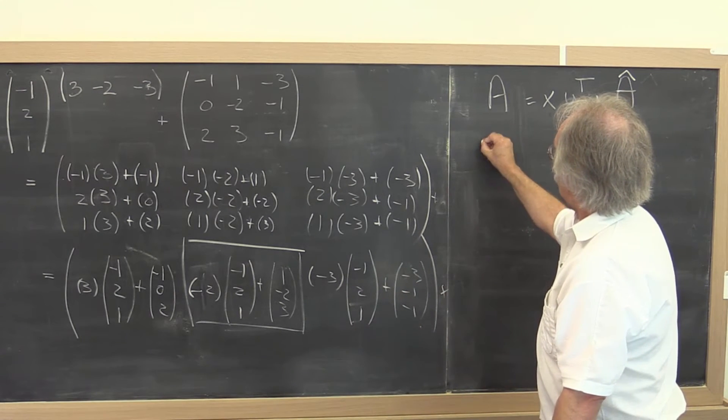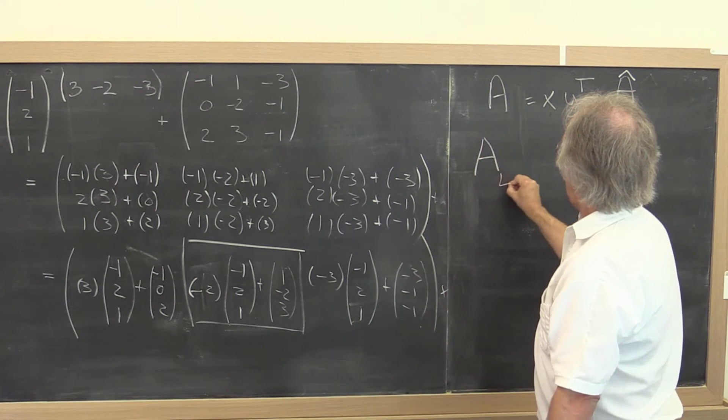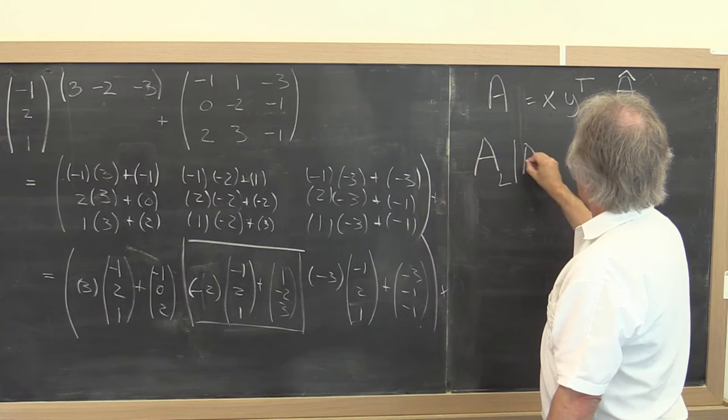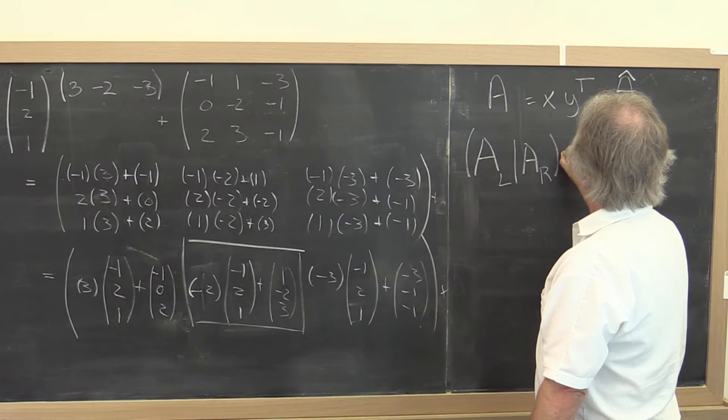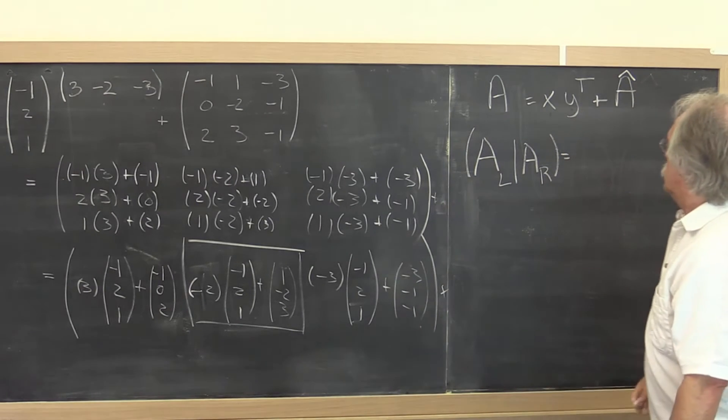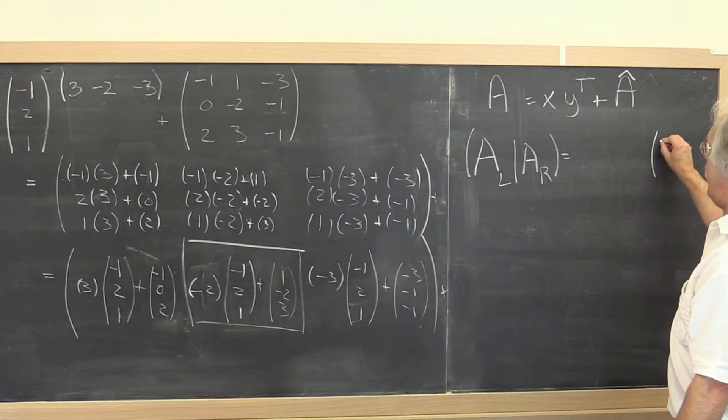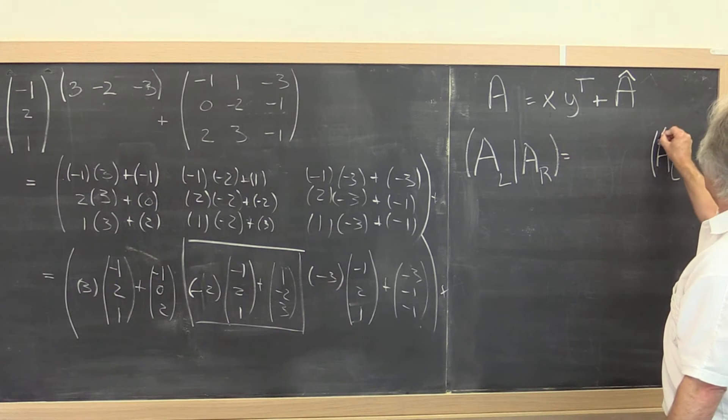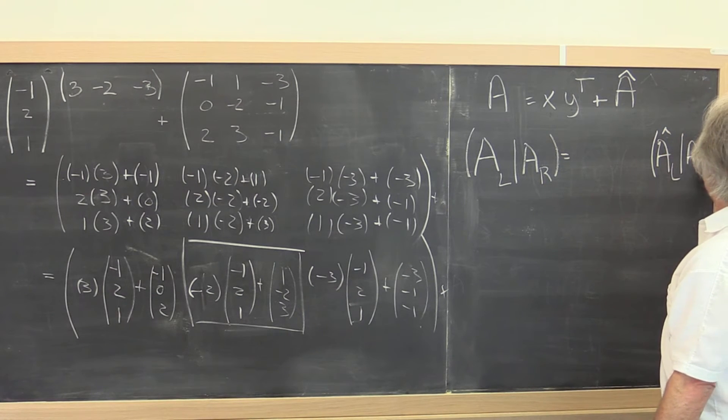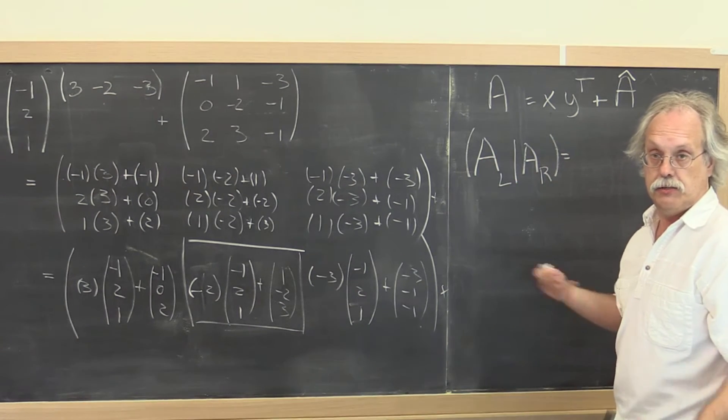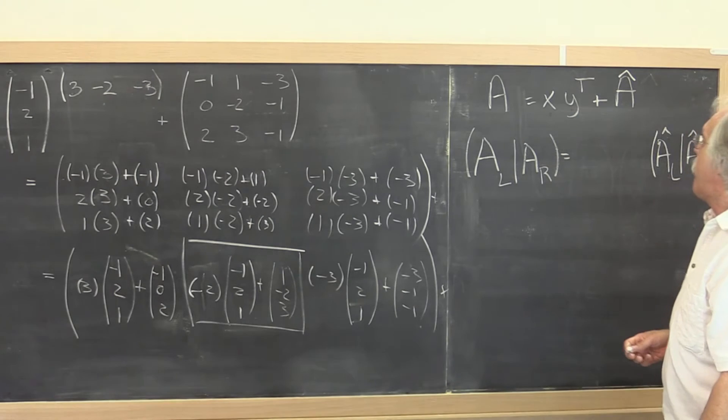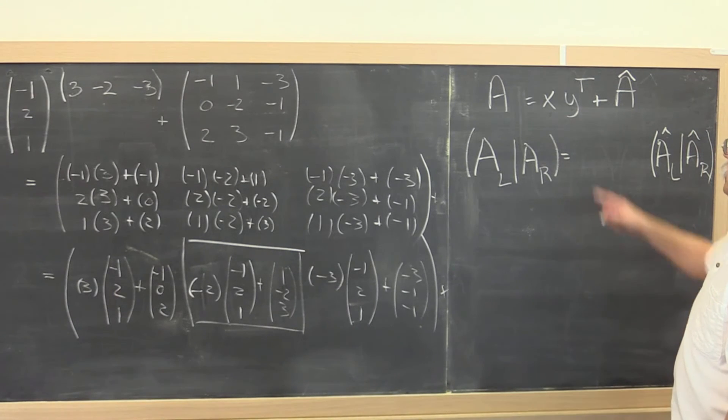So let's see what happens if we partition A into a left part and a right part. Well, that means that A hat is also partitioned into a left part and a right part, because really that refers to the same matrix as that because it's being overwritten. And what do we now need to do with x?